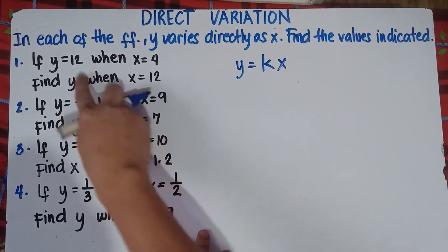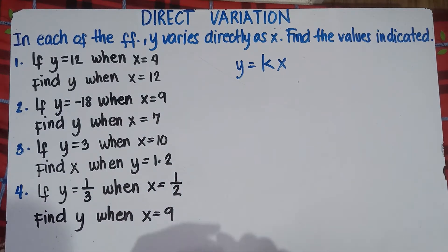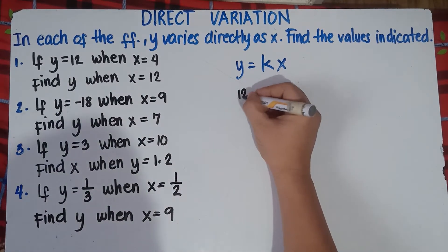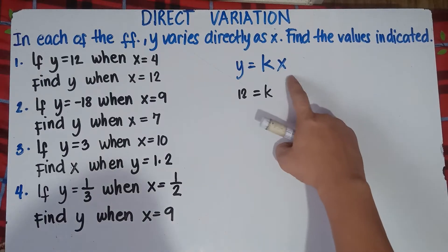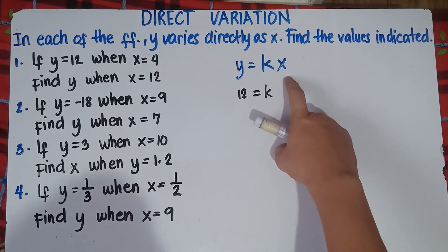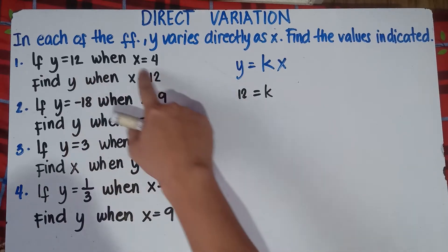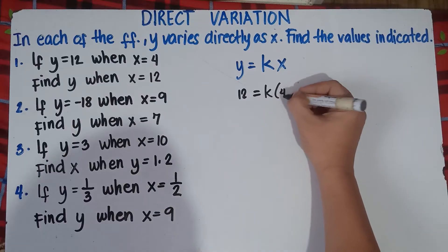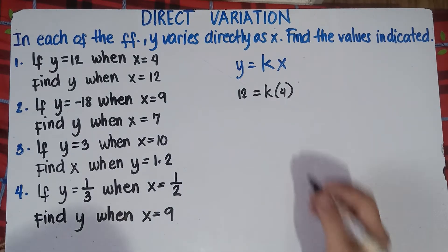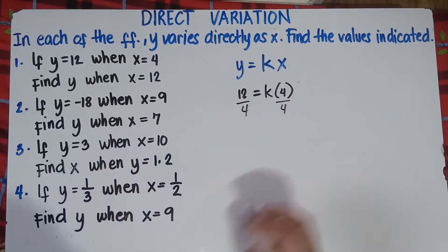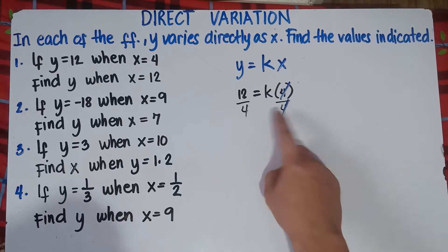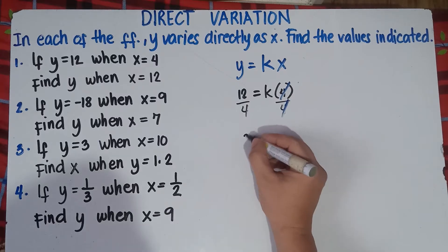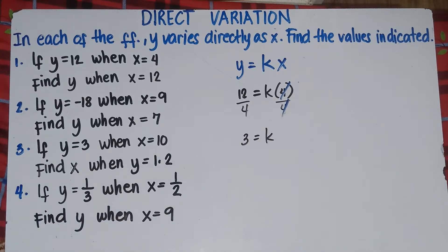Let's solve number one. If y equals 12, so y equals 12 — simply substitute the value of y, that is 12. So 12 equals k times x. If your x is 4, so multiply by 4: 12 equals k times 4. To get the value of k, divide both sides by 4. So 12 divided by 4 is 3. Therefore k equals 3.